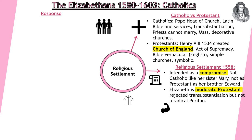Elizabeth herself has a problem. When she becomes Queen, she's just followed on from her sister Mary, so Catholicism was once again reinstated as the main religion of England. So what she decides to do is introduce something called the Religious Settlement in 1558. It's intended as a compromise — she's not going to be Catholic like her sister Mary, but she's also not going to be as strict a Protestant as her brother Edward. Elizabeth is a moderate Protestant.